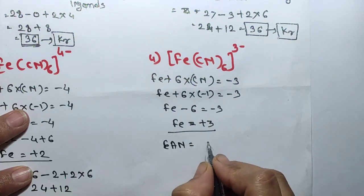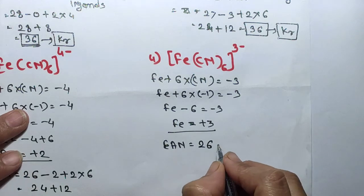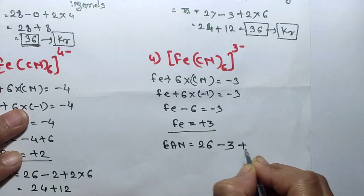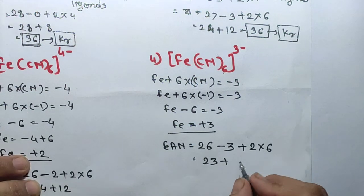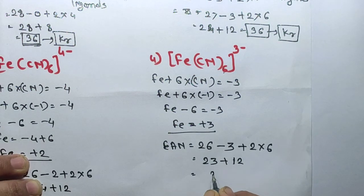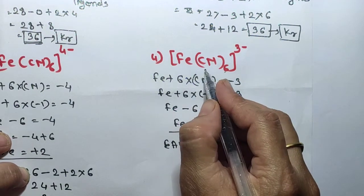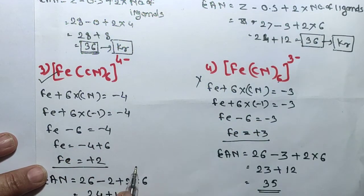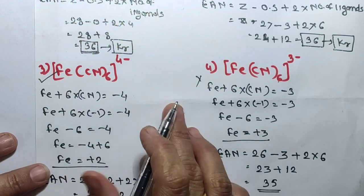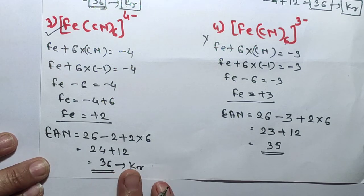EAN equals Z minus oxidation state plus 2 into number of ligands: 26 minus 3 is 23, plus 2 into 6 equals 23 plus 12 equals 35. 35 is not the atomic number of a nearest noble gas, so Fe(CN)₆³⁻ is not a stable complex. Out of the two, Fe(CN)₆⁴⁻ is the most stable, because its EAN equals the atomic number of the nearest noble gas element.